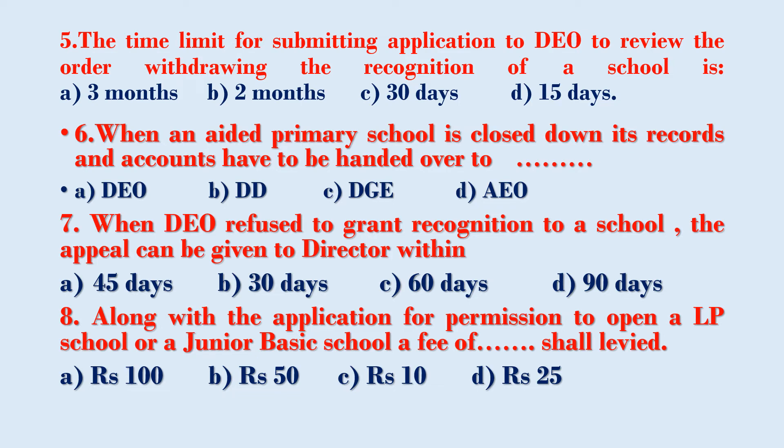When the DEO refuses to grant recognition to a school, the appeal can be given to the Director within: Option A – 45 days, Option B – 30 days, Option C – 60 days, Option D – 90 days. There are many appeals covered in this chapter; when a DEO order is issued, we need to know within how many days to appeal.